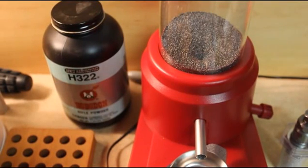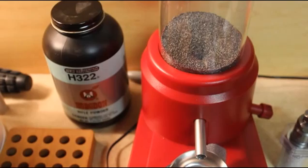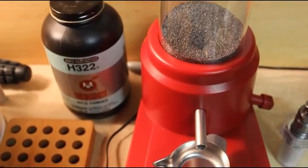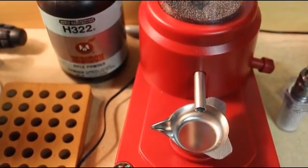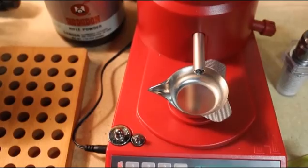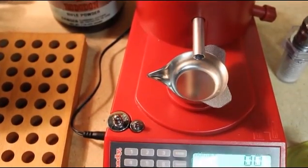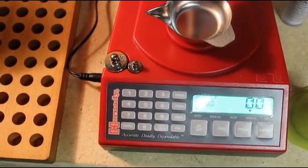Well, reloaders and shooters out there, it's FortuneCookie 45LC coming to you from the hot lead zone. And what we have here is the Hornady Automatic Powder Dispenser and Hodgdon H322 Powder. We're going to be loading for the 223 Remington.